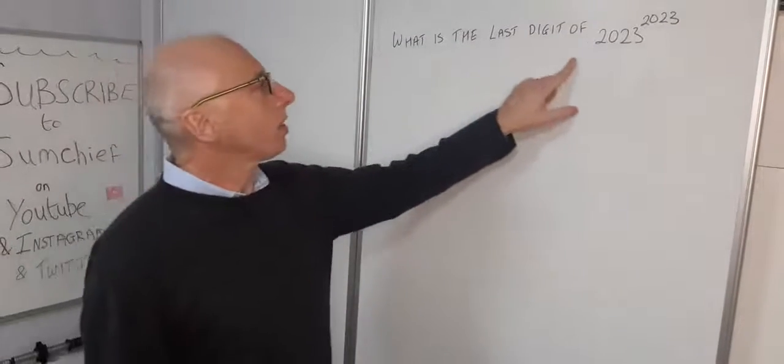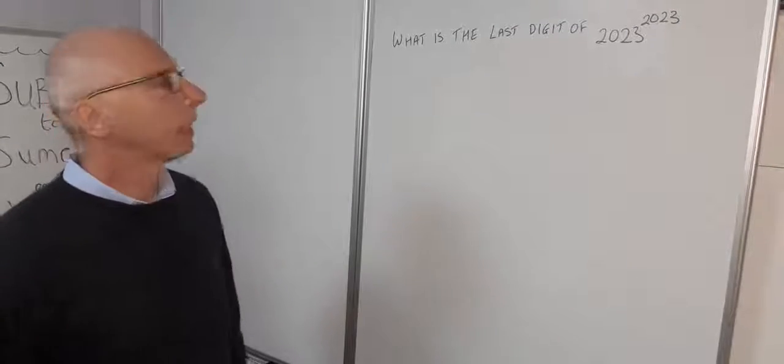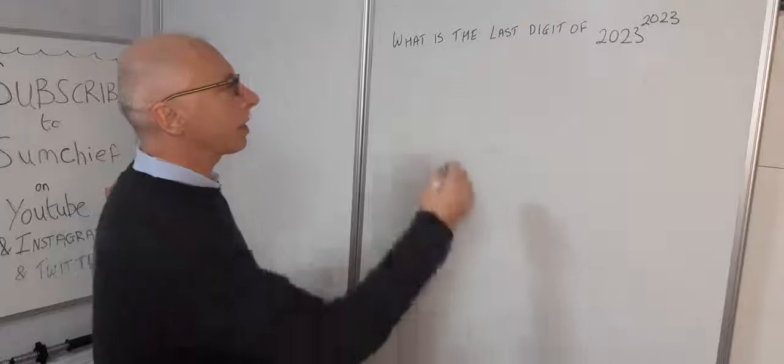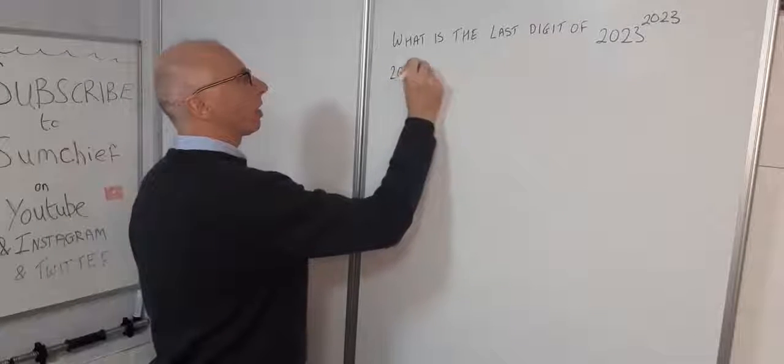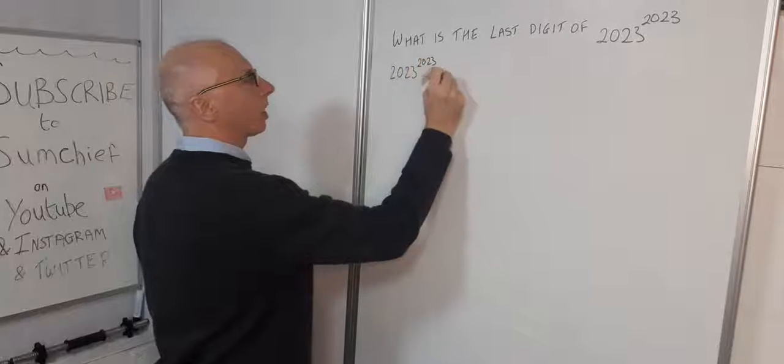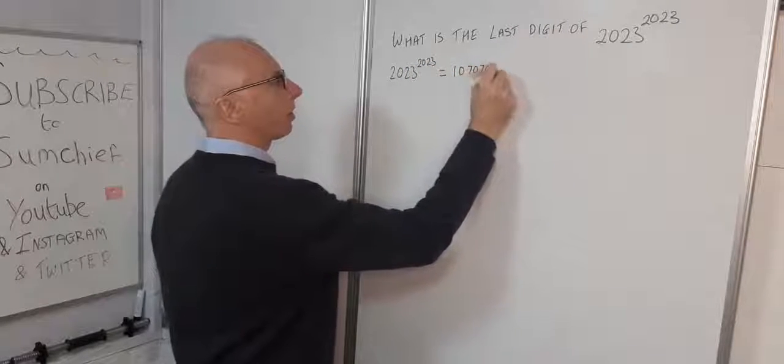What is the last digit of 2023 to the power of 2023? It's going to be a big number, probably about six and a half thousand digits long. So 2023 to the power of 2023 is 1070707...